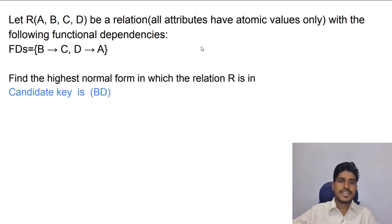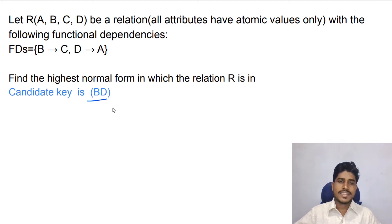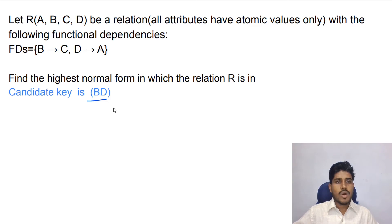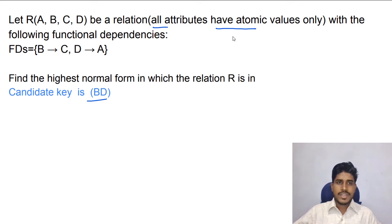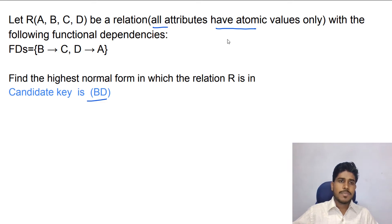In this relation, the candidate key is BD. Now we have to check whether this relation is in first normal form. First normal form requires that all attributes should have atomic values. In the question it is mentioned that all attributes have atomic values, so this relation is in first normal form.